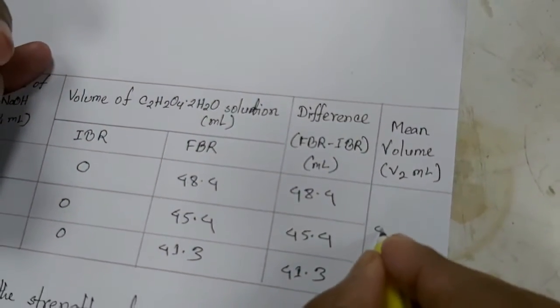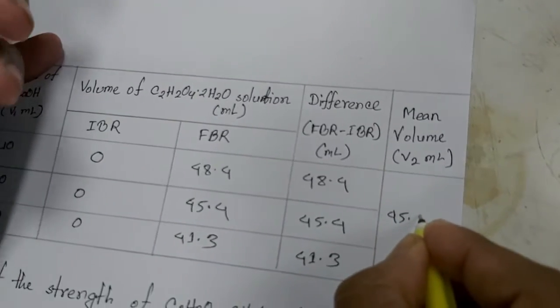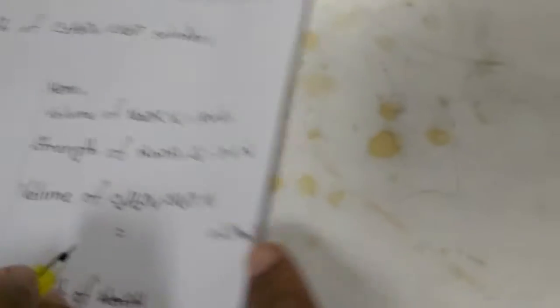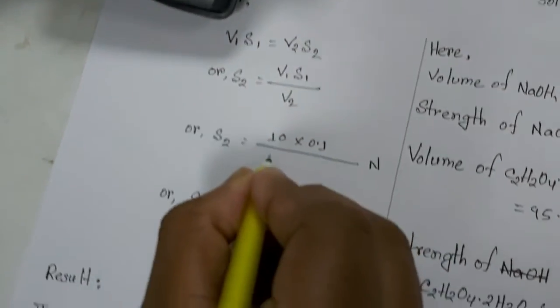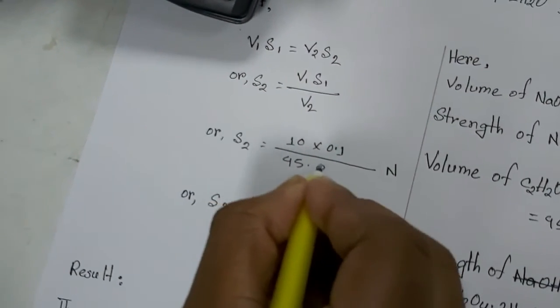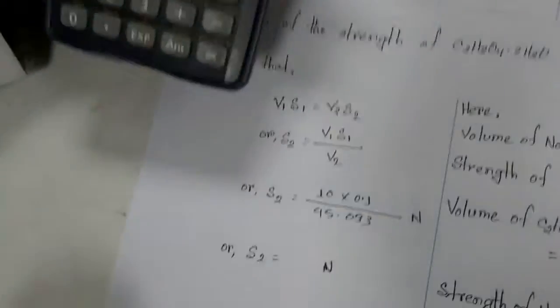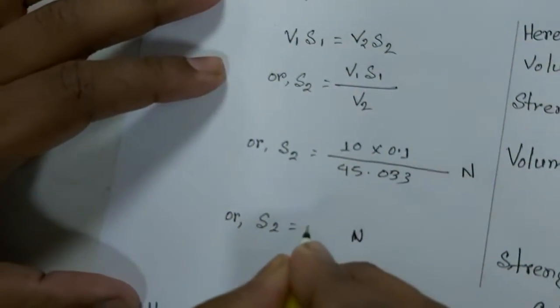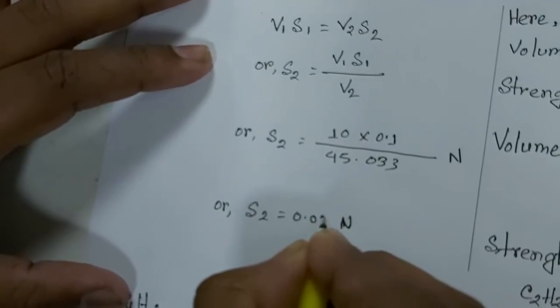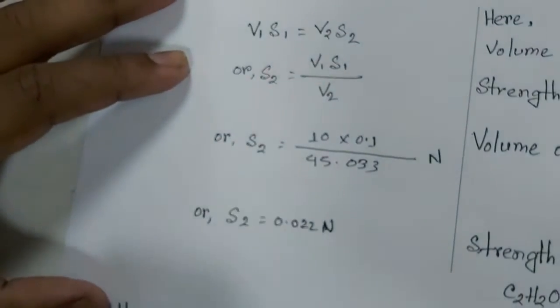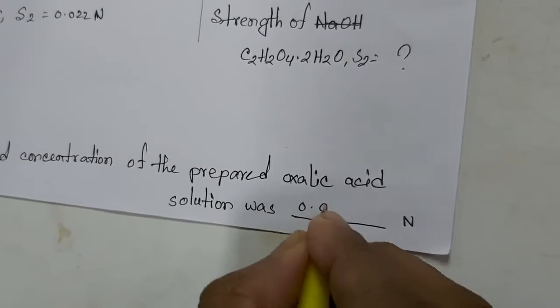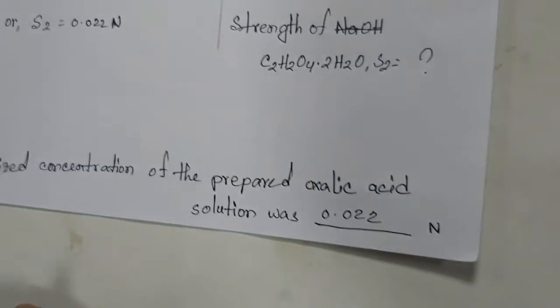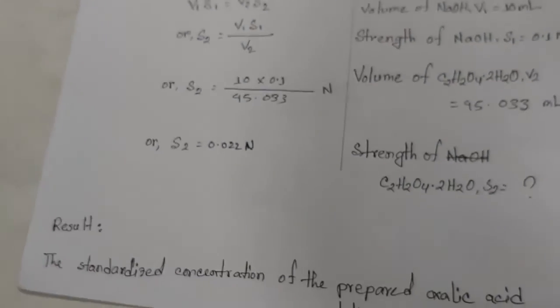The average value is 45.033. This value is the volume v2. We have to write the volume of v2 - 0.022 - and this is the final volume value for the titration: 0.022 normal.